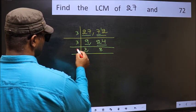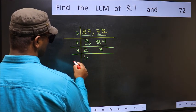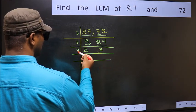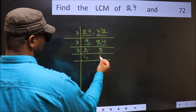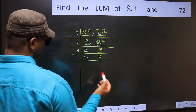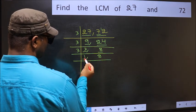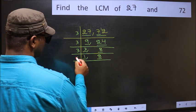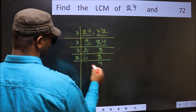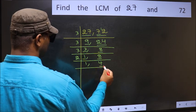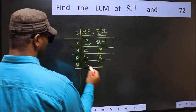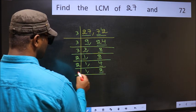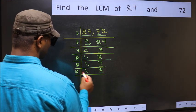Now 3 is a prime number, so 3 divided by 3 is 1. The other number is 8, which is not divisible by 3, so we write it as it is. Now we have 1 and 8. Next, 4 divided by 2 is 2, and 2 is a prime number, so 2 divided by 2 is 1.